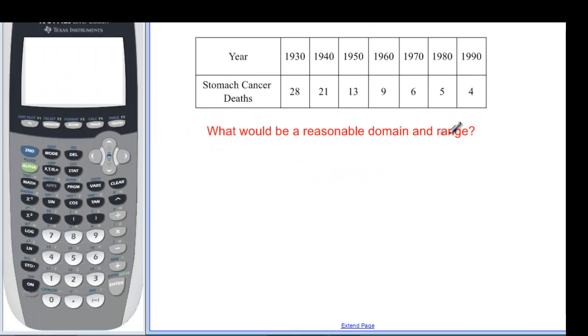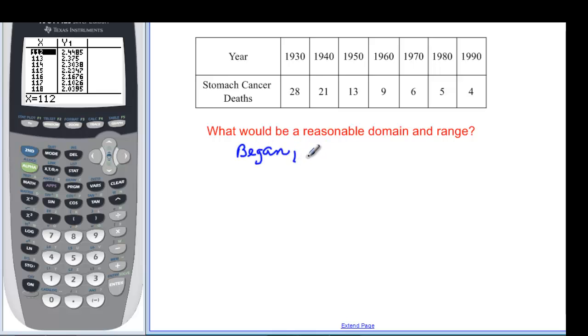Then it asked me, what would be a reasonable domain and range? Well, we know it started in 1900, so it's when it began. And we're going to go up to whenever we think it might be 0. And if you look at this, it's going to take a long time to get to 0. In fact, if you remember about exponential functions, they get real close to 0, but never get there.